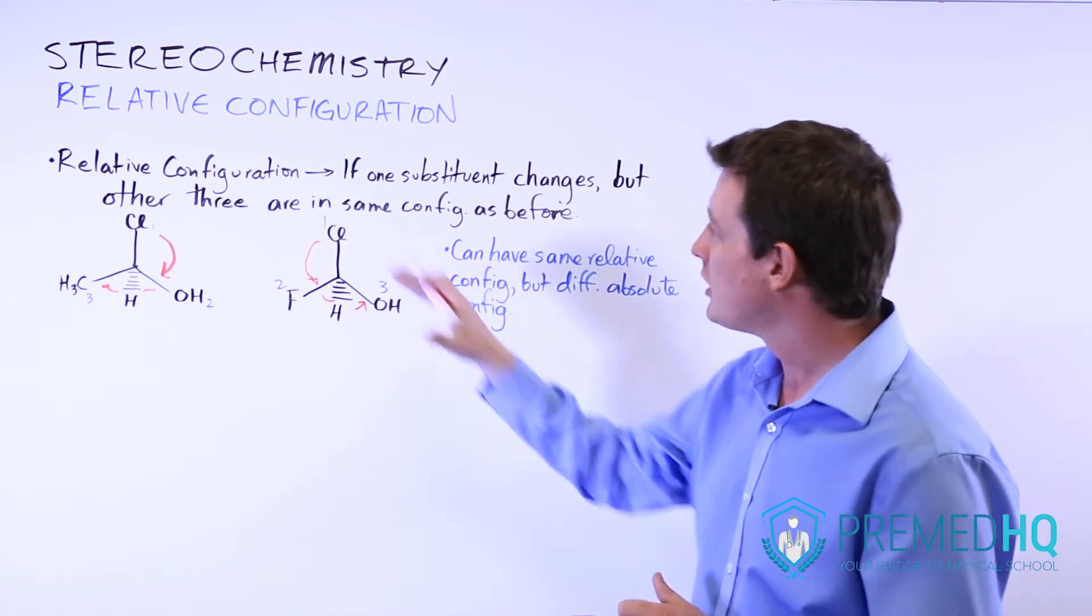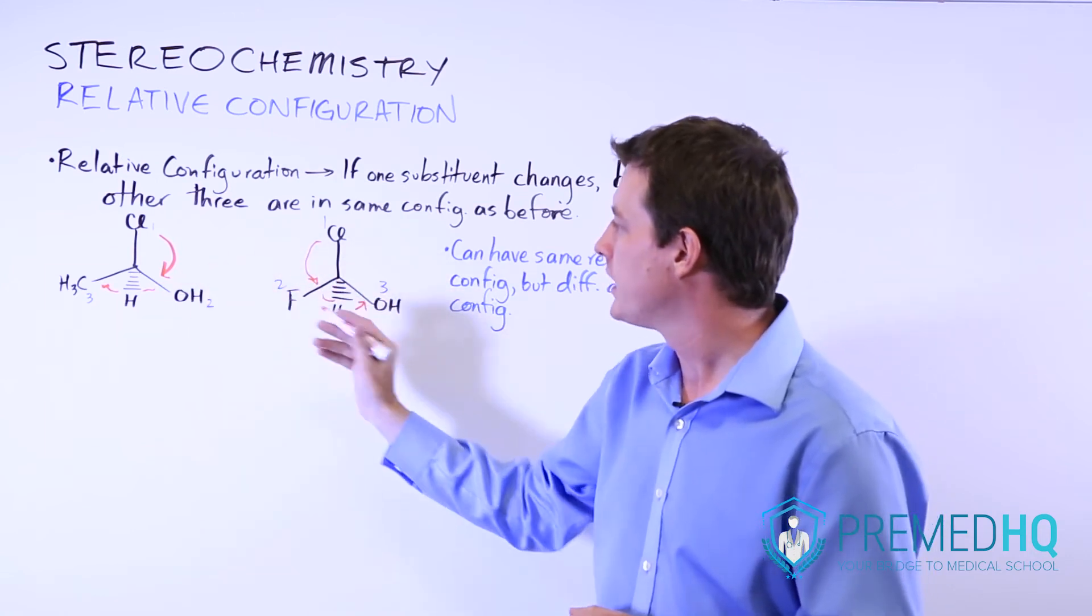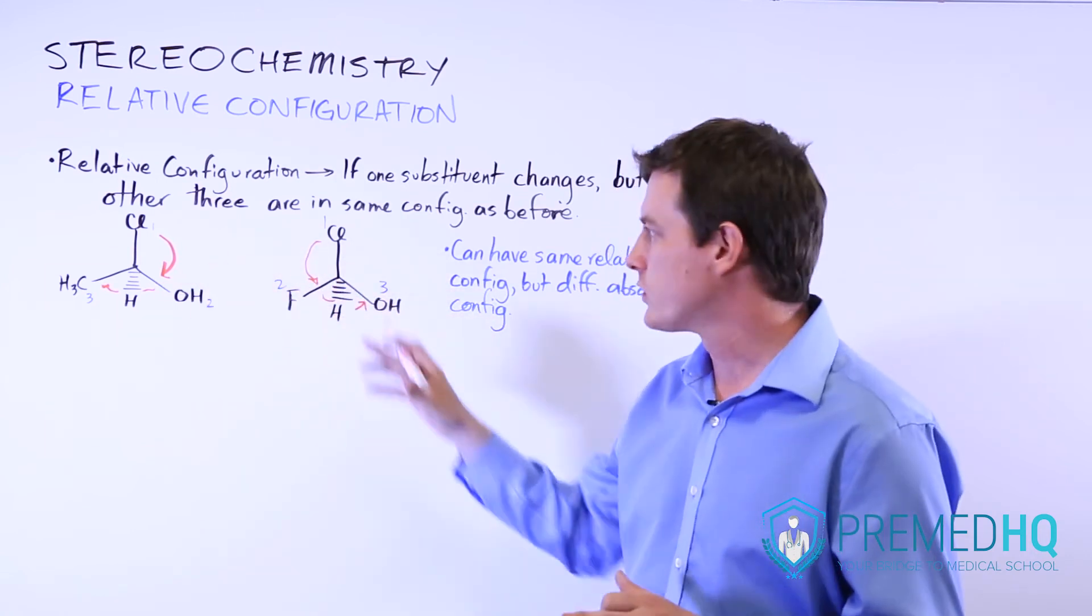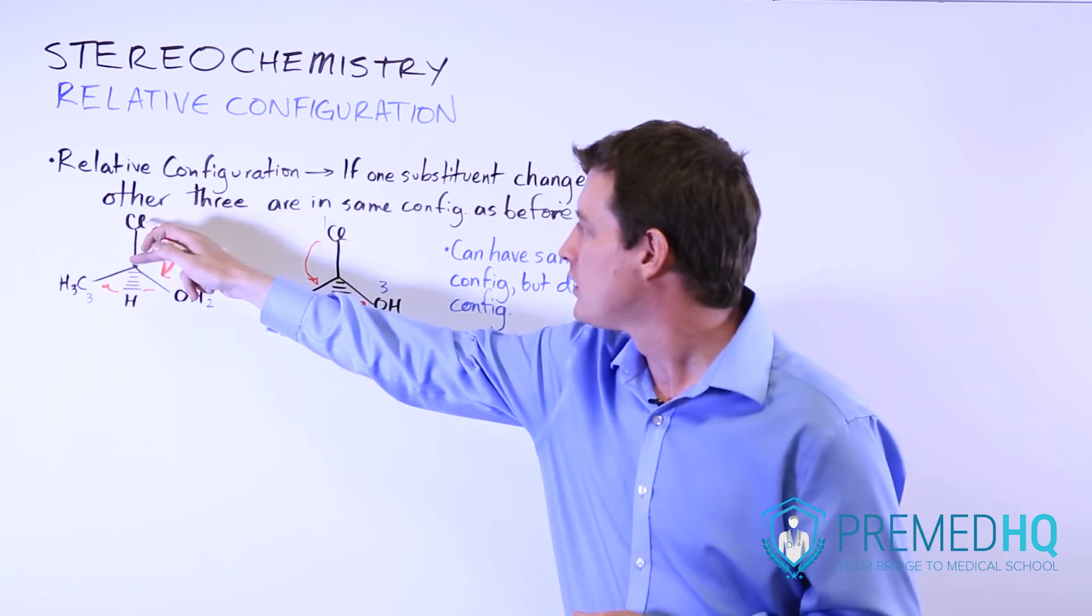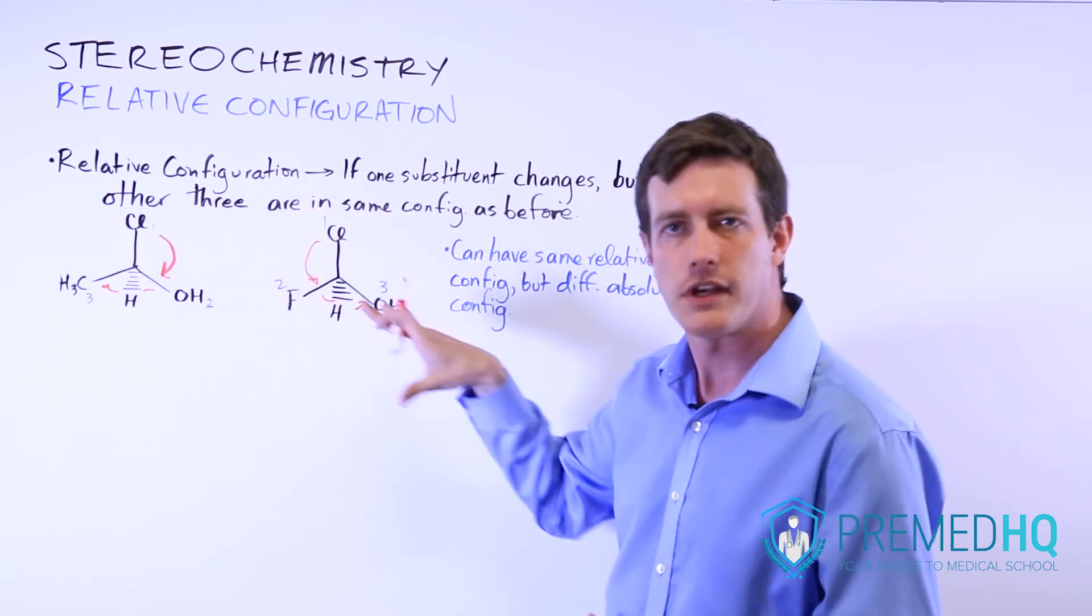So just realize that relative configuration is saying other than the one substituent that has switched places, is everything else oriented in the same way. And here it is chlorine at the top, hydroxyl group over here, and the hydrogen facing away from us.